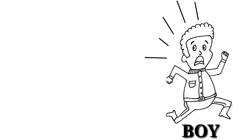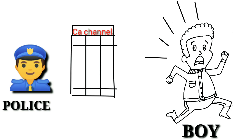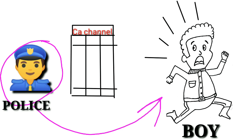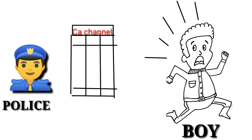Here you can see a boy and he's running. He's so worried and tensed up too. Why is he running? He's running because here is a police and he has a channel with him — it is a calcium channel. That means this police wanted to seize the freedom of this little boy with the help of the calcium channel. That is why this boy is running and escaping from this channel, shouting: No! No! No! I don't want to seize my freedom with this calcium channel.